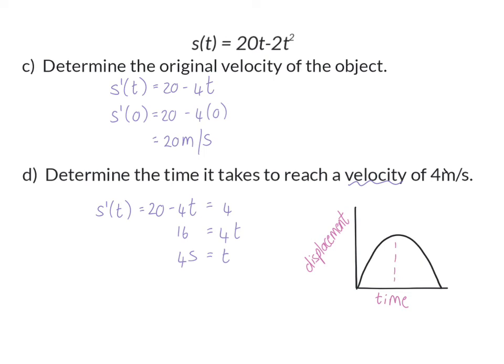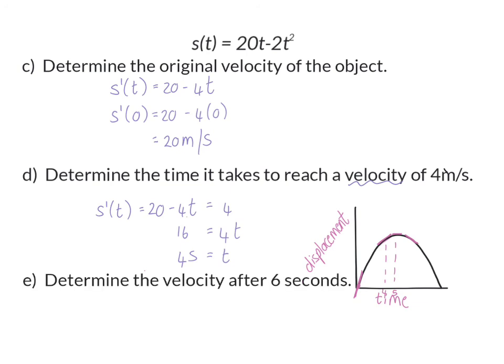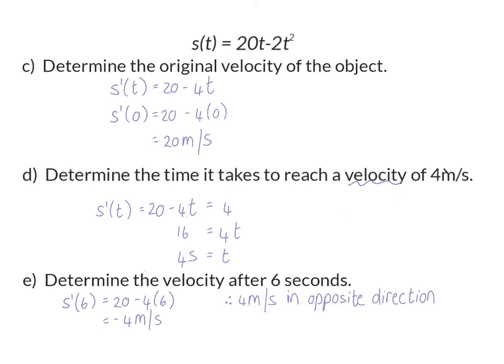In Question B we calculated that the maximum displacement is at 5 seconds. We calculated the velocity — which is the derivative or gradient of the function — and at t=0 the velocity was 20, and at t=4 it was only 4. At 5 seconds, for a moment the object is standing still, then it starts returning to its original position, so the velocity becomes a negative value. A negative velocity indicates the object is moving in the opposite direction, back to its original position. For example, the velocity after 6 seconds would be minus 4 meters per second, meaning it is traveling at 4 meters per second back to its original position.